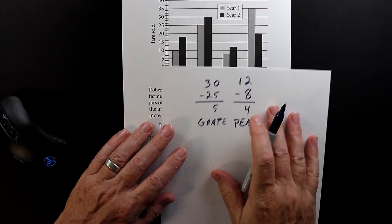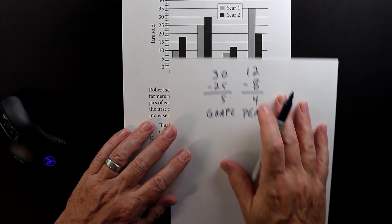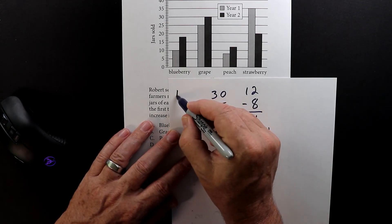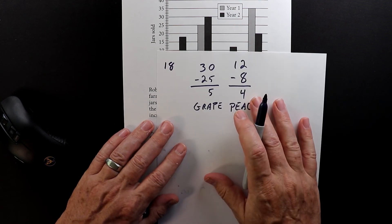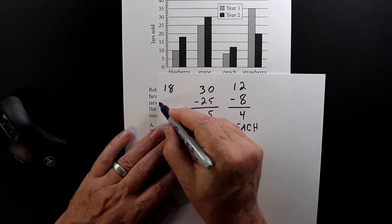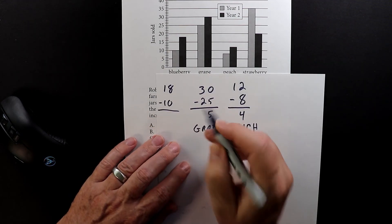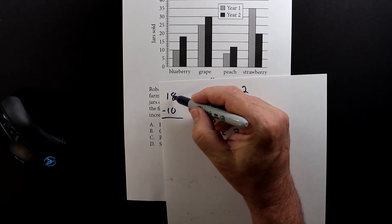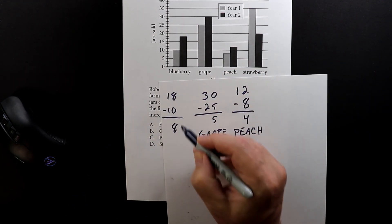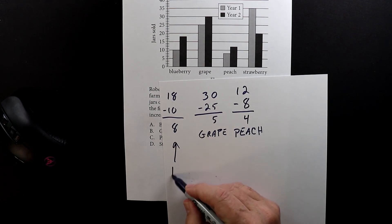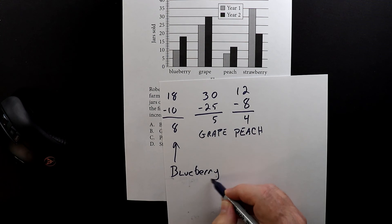And then the last one, he sold 18 on the second year and then 10 on the first year. So 18 minus 10 is 8. So obviously blueberry is the winner.